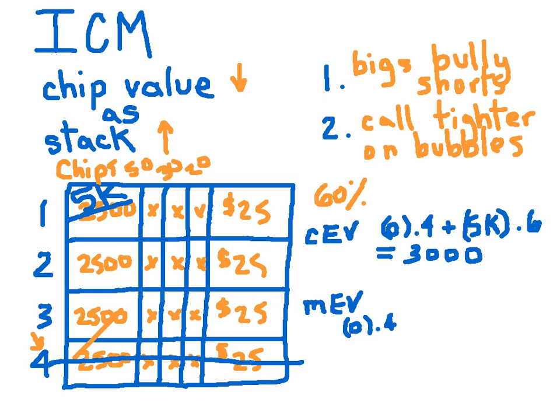Remember, ICM tells us the additional 2,500 in chips is worth less than the original 2,500 to the tune of several dollars. So instead of $50, we actually end up with $38.33.